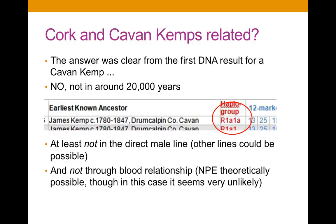The answer was very clear: no, they're not related — not for at least 20,000 years — because the Cavan Kemps turned out to be R1A, and therefore a completely different family. So it was the first discovery we made, and it also meant we had a fairly distinctive DNA pattern to compare with further Cavan Kemp tests. We have mutual caveats — there could be relationships through other lines — but I don't think there's an MPE non-paternal event involved. So we have two quite separate Kemp families in Ireland.